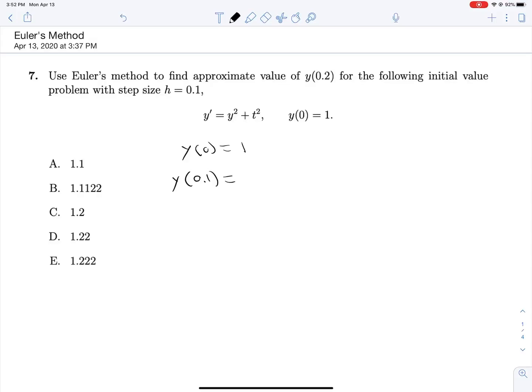that's going to be equal to this past value that we had. So our y at 0, which is 1, plus our step size of 0.1, times this guy evaluated, so our y prime evaluated with our most recent known values for t and y.